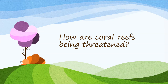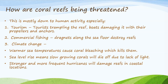How are coral reefs being threatened? This is mostly down to human activity, especially: one, tourism — tourists trampling the reef, boats damaging it with their propellers and anchors; two, commercial fishing, where drag nets along the sea floor destroy reefs; and three, climate change — warmer sea temperatures cause coral bleaching which kills them, sea level rise means slow growing corals will die off due to lack of light, and stronger and more frequent hurricanes will damage reefs in coastal locations.